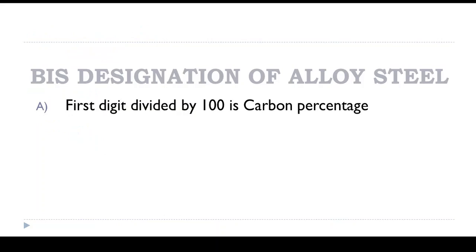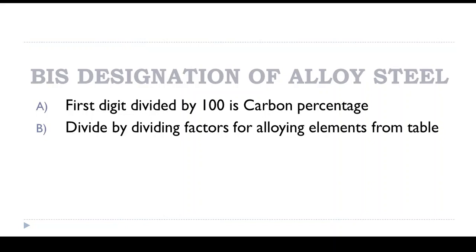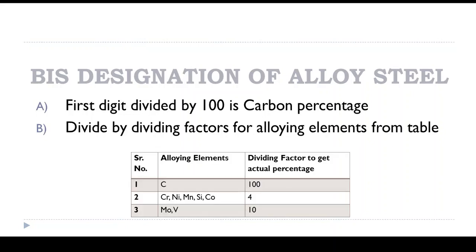Alloy steel's BIS designation: first digit divided by 100 is carbon percentage. Then for next alloying elements you will have to refer the table given below.